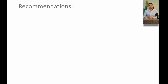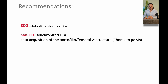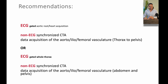Regarding recommendations, we're going to talk about ECG-gated aortic root and heart acquisition. That means you have to connect ECG leads to the patient while doing the CT in order to capture the cardiac cycle and know when to take the images. When you do ECG-gating, the length of the scan is prolonged compared to a regular CT. That's why the most important area for ECG-gating is the aortic root and the heart. However, the rest — the aorta, iliofemoral, and femoral vasculature — are non-ECG-gated. The other option is to do the whole thorax with ECG-gating and then the rest without.